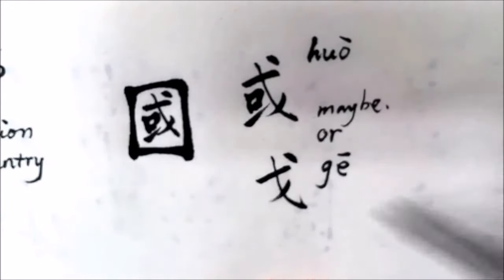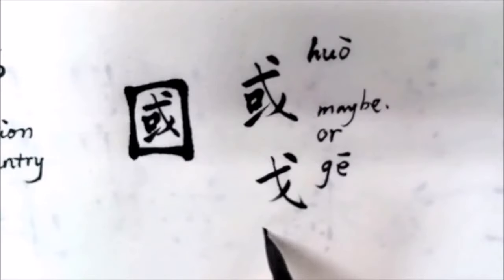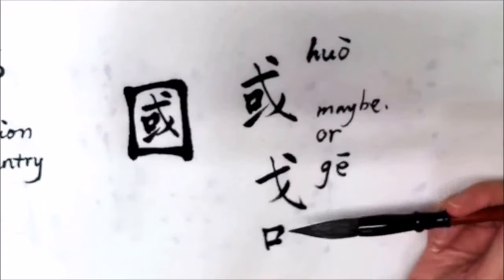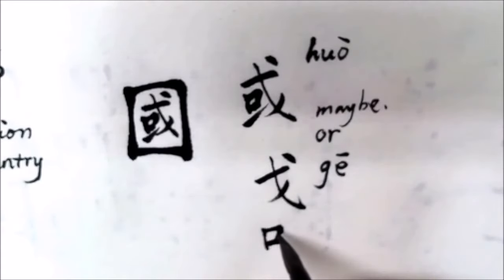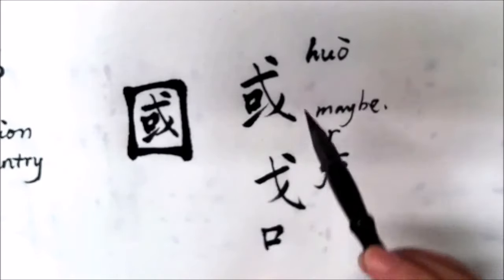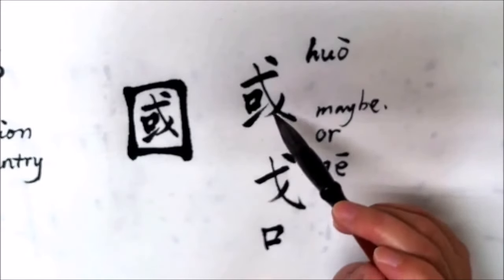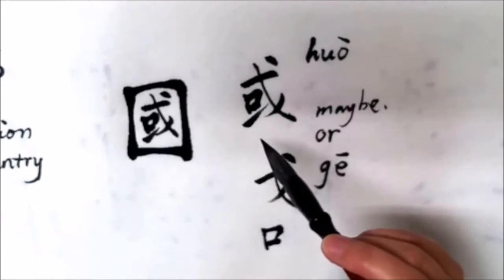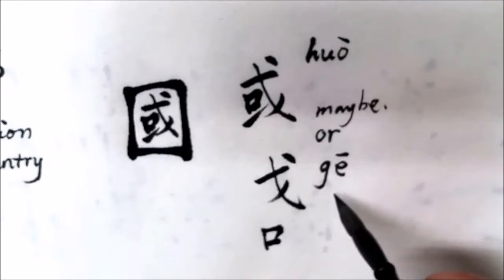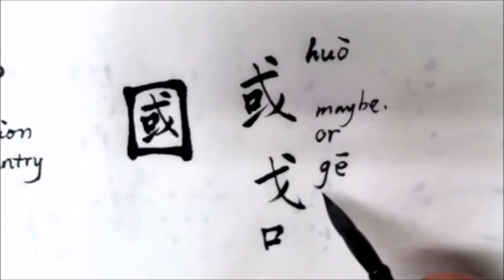戈 (gē) is a type of weapon. And another part we can see in this 或 (huò) represents the border of a country. So at a certain time in history, 或 (huò) means an occupied land protected by military force, because the weapon represents the military force.